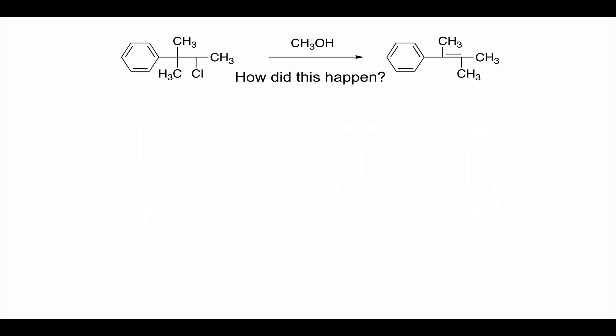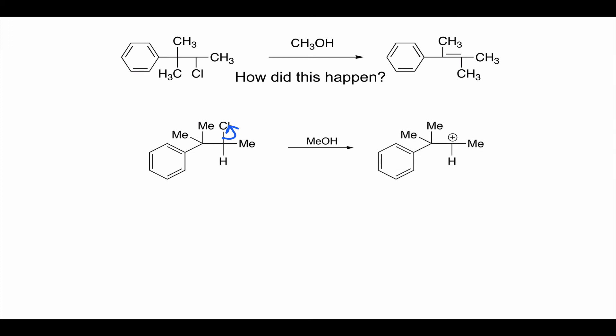This connects back to SN1 reactions: with SN1, you have an intermediate carbocation, and if a carbocation can rearrange to a more stable one, it will rearrange — there's nothing you can do to stop it. Going step by step through the mechanism will show you the answer. The first thing that happens is loss of the chloride leaving group, giving a secondary cation. A secondary carbocation isn't ideal, but it forms — and since a tertiary is better than a secondary, we consider whether a rearrangement can occur.